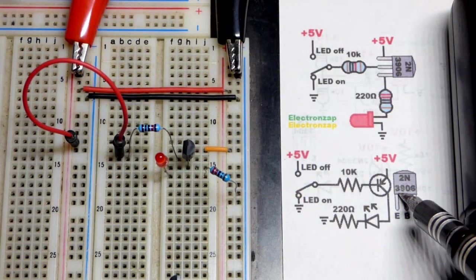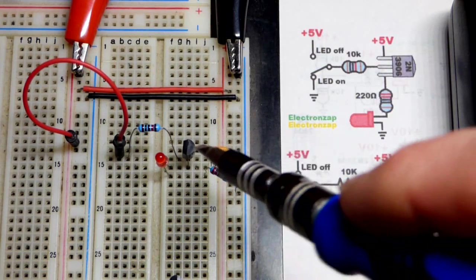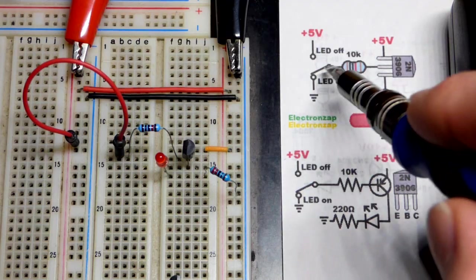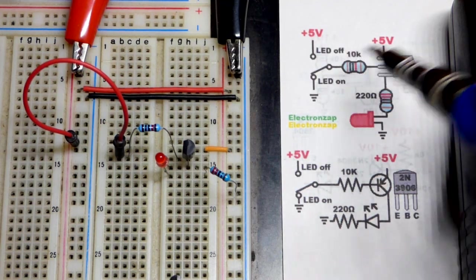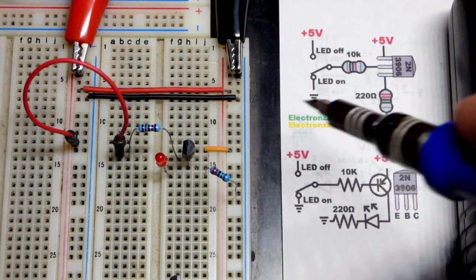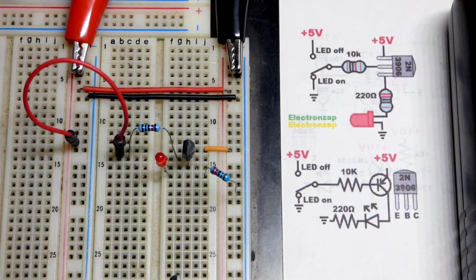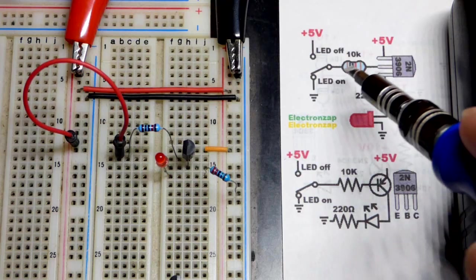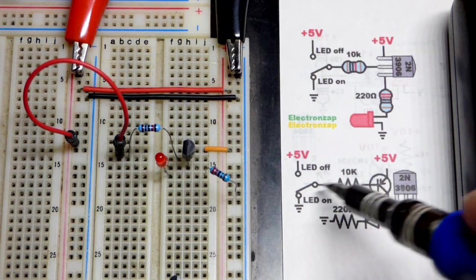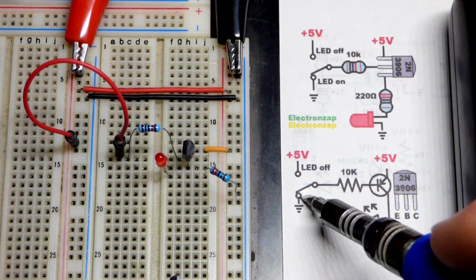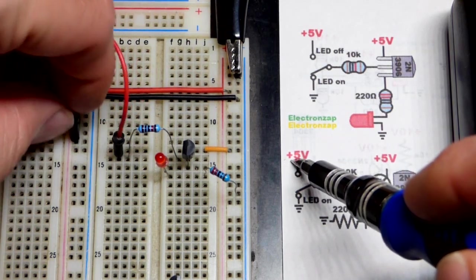In this video we're going to look at the PNP bipolar junction transistor wired as a switch. We have this circuit on the board there and the NPN diagram up there. I didn't have the circuit drawn where it showed the off position, I just showed a switch that could disconnect or connect. We have the jumper here to the positive supply up here, that is why the LED is up.